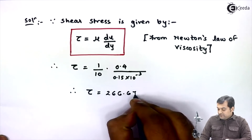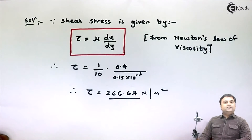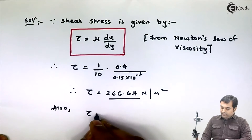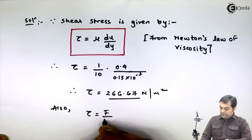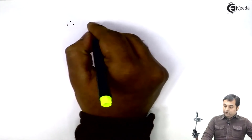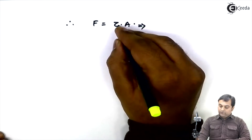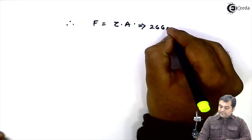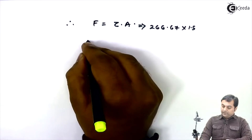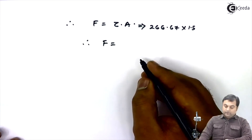Shear stress = 266.67 N/m². Now shear stress equals force divided by area, so force = shear stress × area = 266.67 × 1.5 = 400 N. This is the first answer.